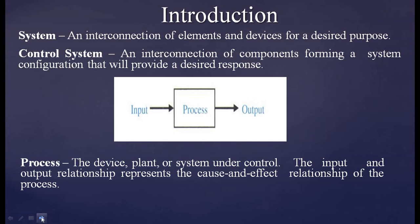What is the process? The device, plant, or system under control is called a process. The input and output relationship represents the cause and effect relationship of a process. A change in input will be the cause, and the effect of the process will be an output. So a change in the input is responsible for the process to give some desired effect which is called the output. This was regarding the system, control system, and process.